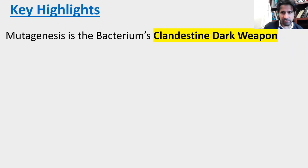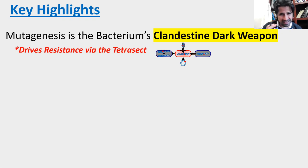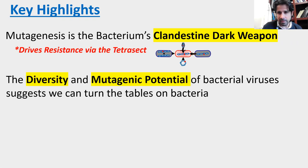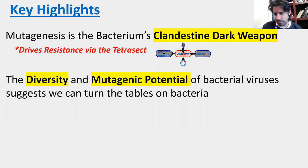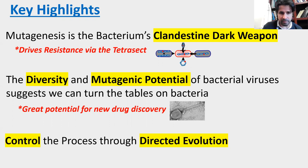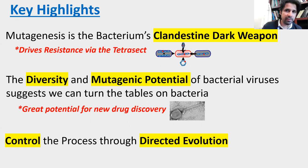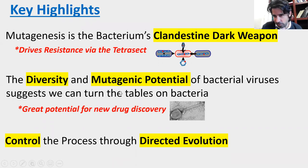Some key highlights: the mutagenic tetracet is bacteria's clandestine dark weapon — that's how they get around the measures we throw at them, particularly antibiotics, driving resistance. But phage have diversity and mutagenic potential as well. There's genetic diversity with many different phage types, plus the ability to change their genetic information so we can turn the tables on bacteria. This represents great potential for new drug discovery. By placing the conditions of evolution on the system, we control the process and the variants that come up through directed evolution. Thanks for watching.